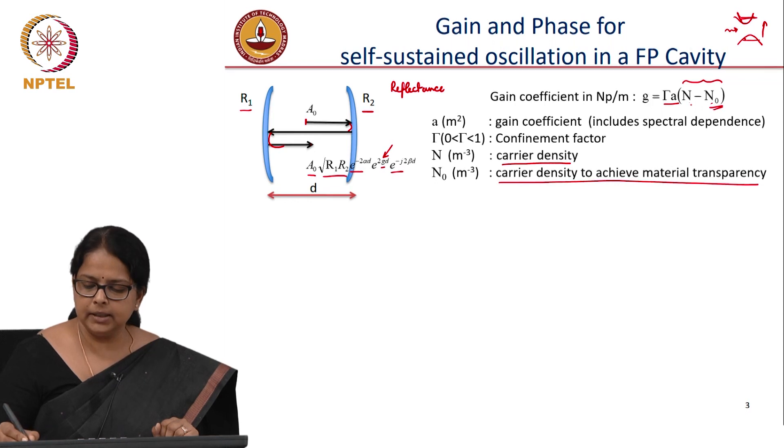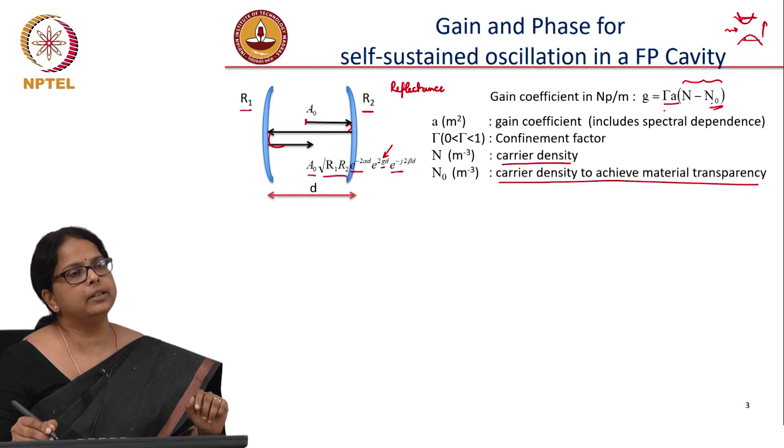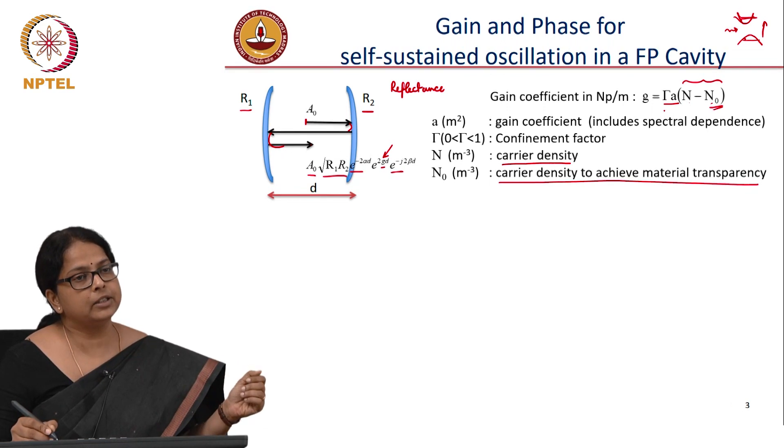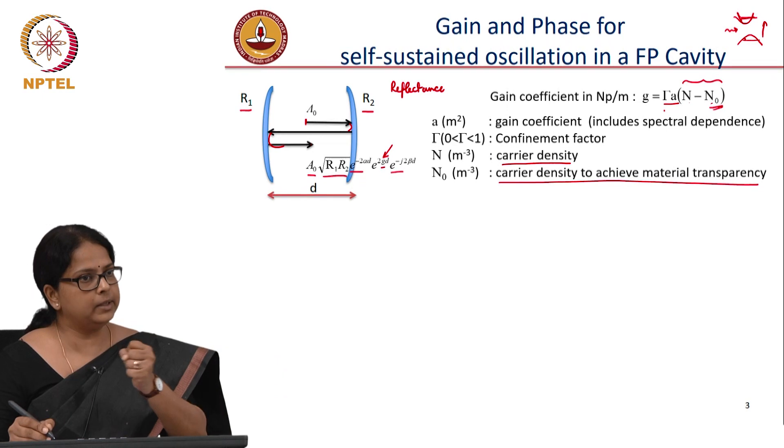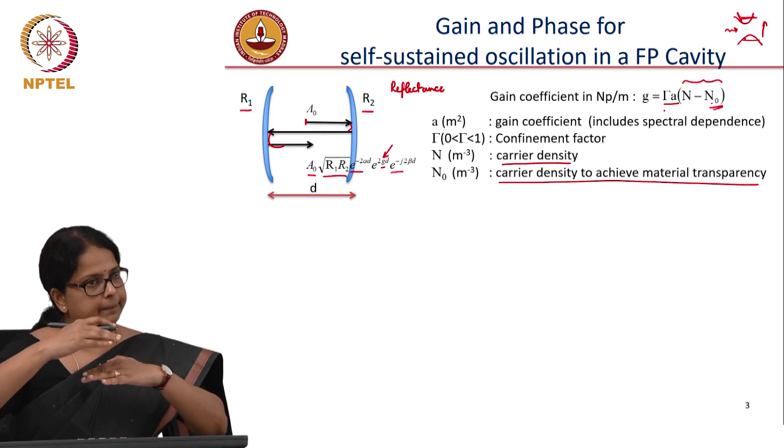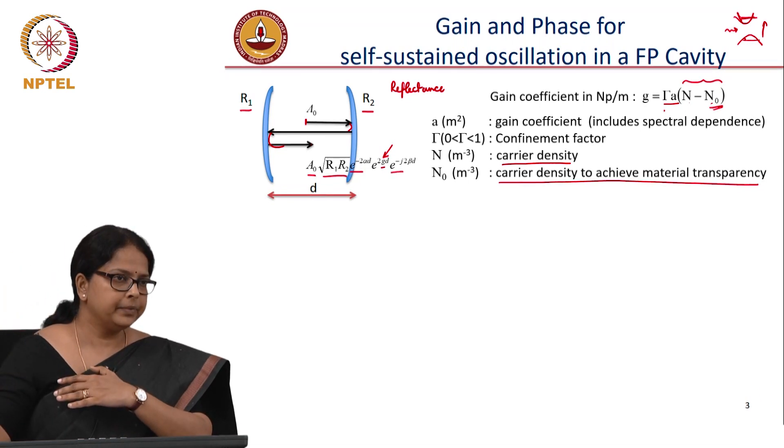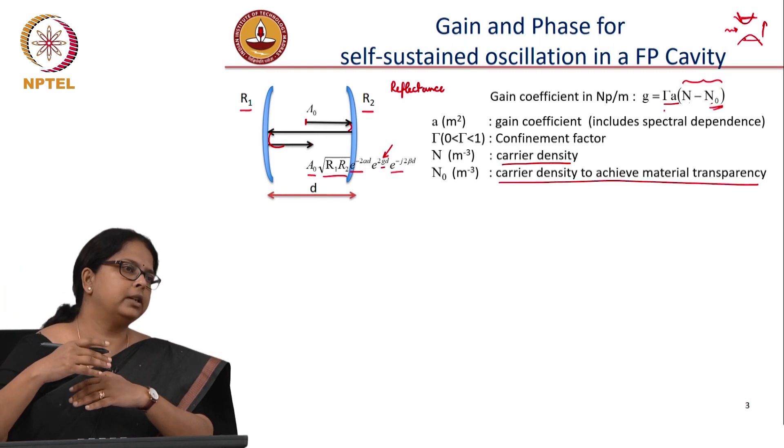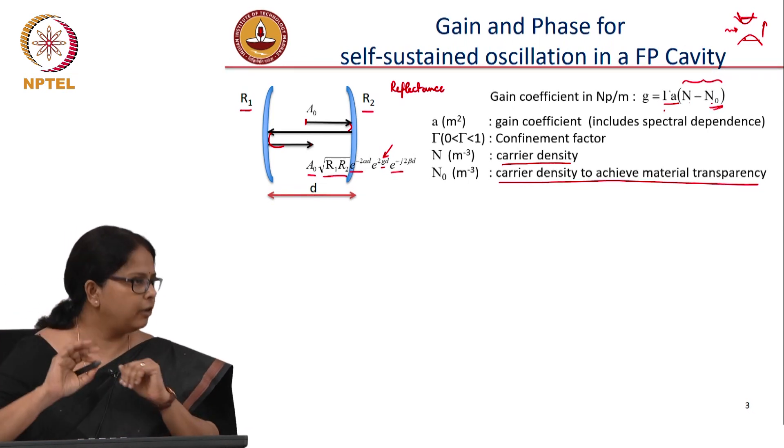The gain coefficient is proportional to this N minus N naught and the proportionality constant has this constant A. That proportionality constant, we also know that the gain coefficient, the rate of spontaneous emission, we said that it is also wavelength dependent, frequency dependent phenomena because it is not necessary that all the frequencies above the band gap, frequencies hν greater than the band gap is emitted. It also depends on the population, the density of states and the probability of occupation.